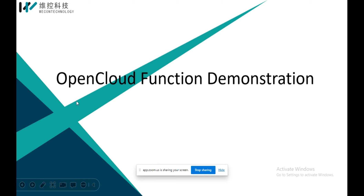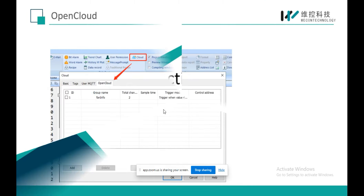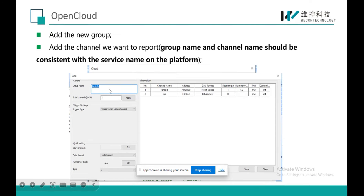Moving to the next part: the Open Cloud function demonstration. Since we mentioned earlier that Open Cloud has a designated interface in Pi Studio, we need to go to the Cloud tab and open the Open Cloud section. We add a new group and a new channel we want to upload to the server. The channel name should be consistent with the service name on the platform — my service names on Huawei are fan speed and run.